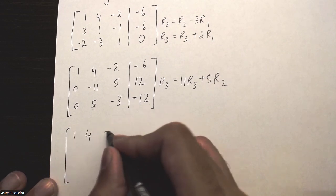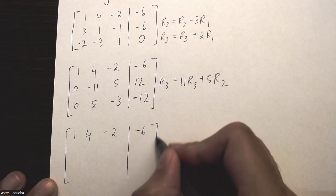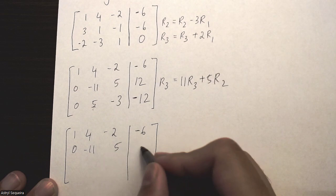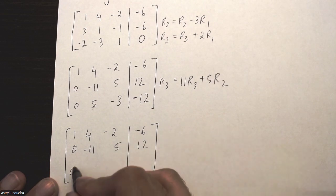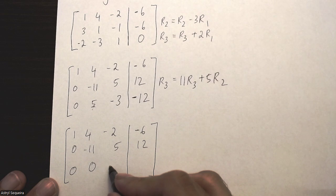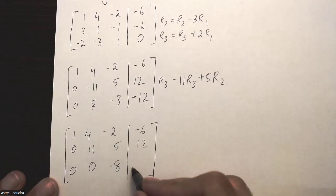First two rows are going to be exactly the same. Nothing changes over there. Now the third one is going to be 0, 0, negative 8, negative 72.